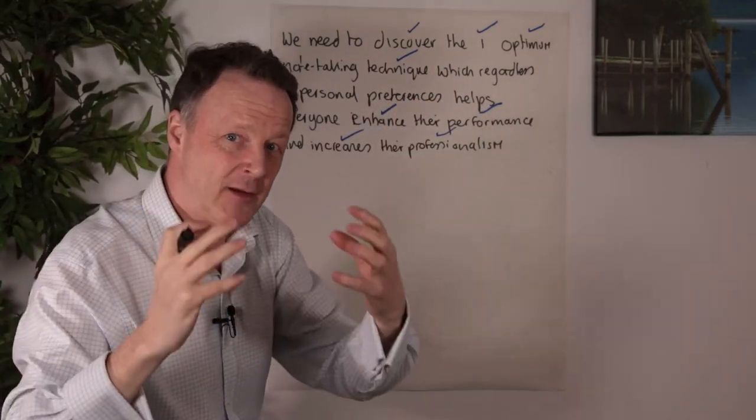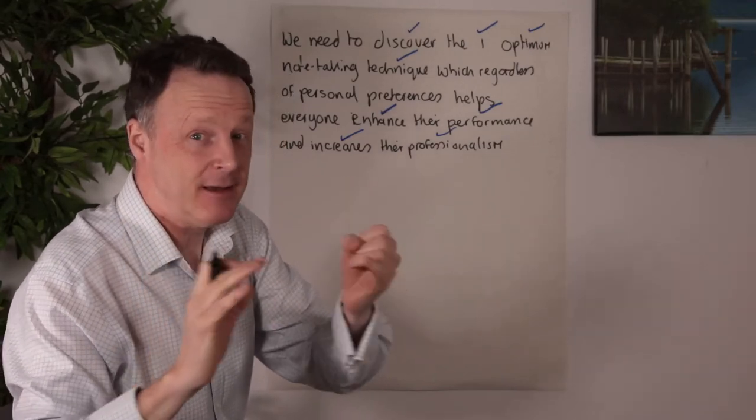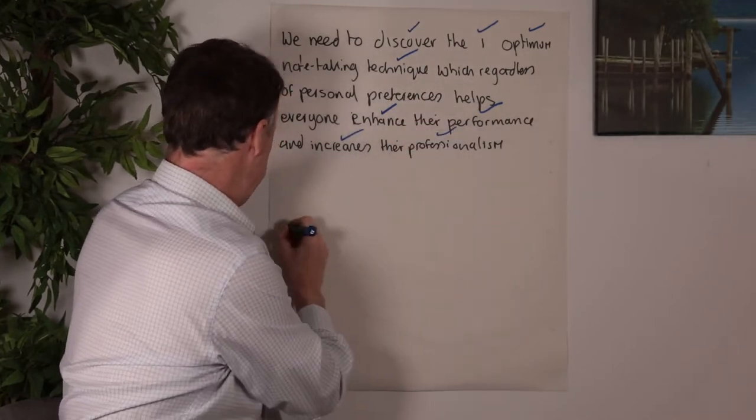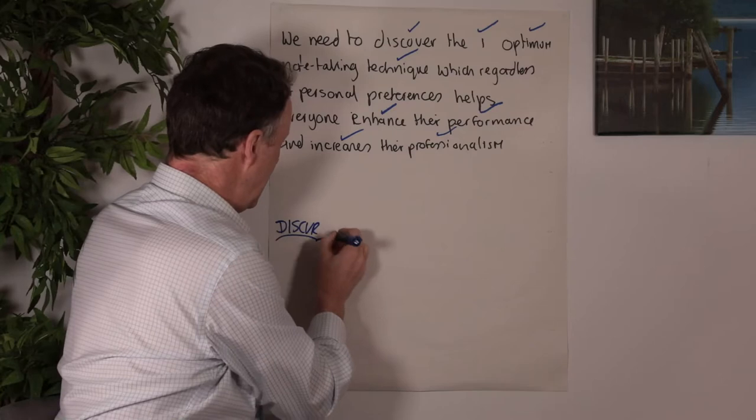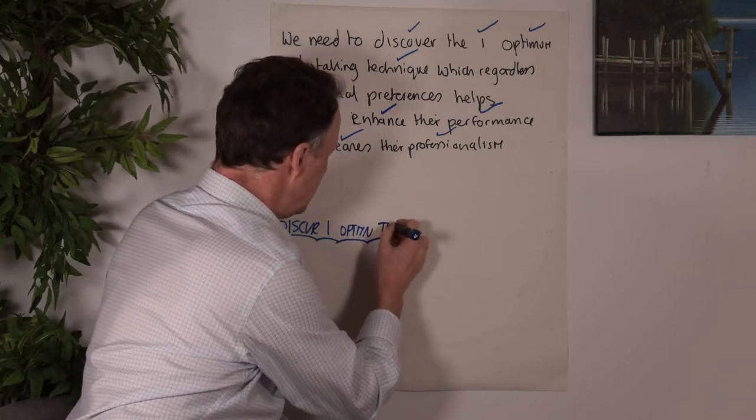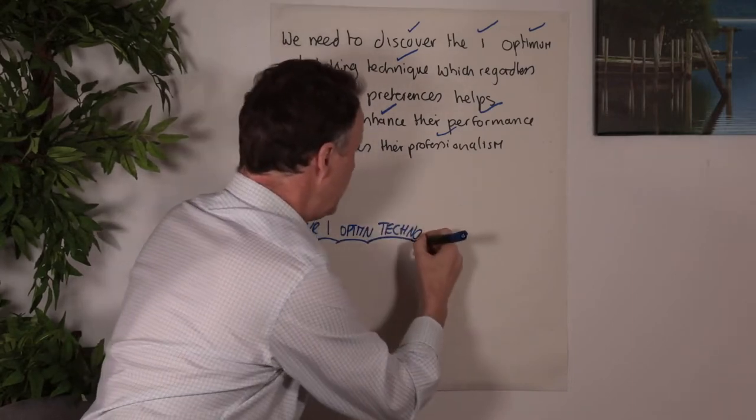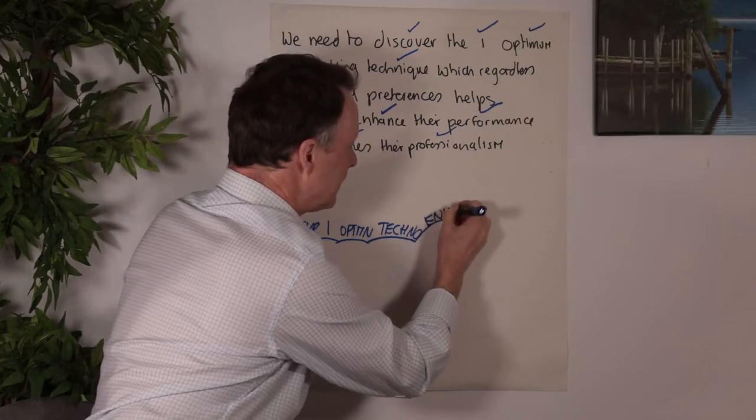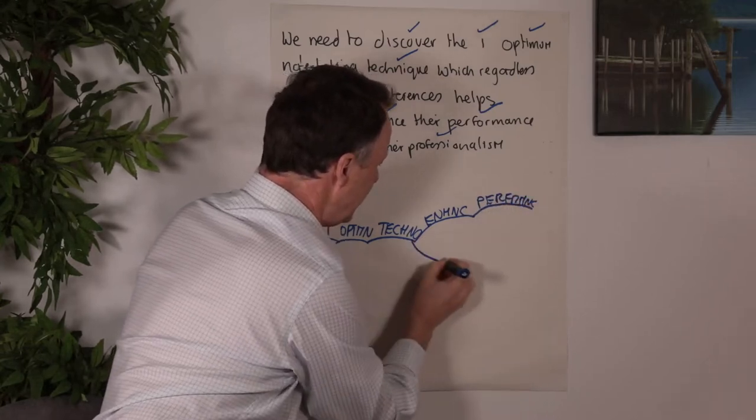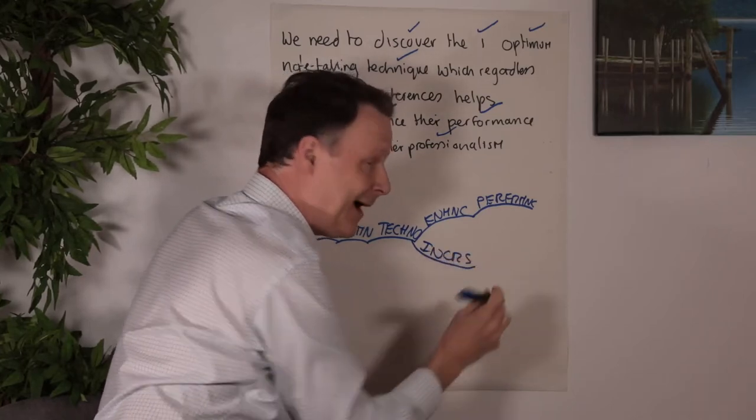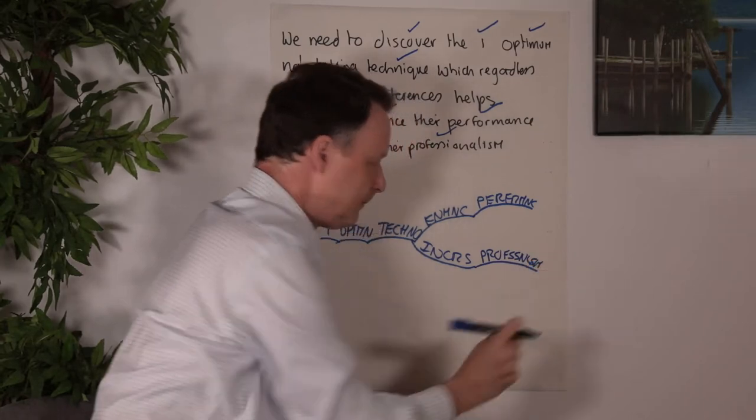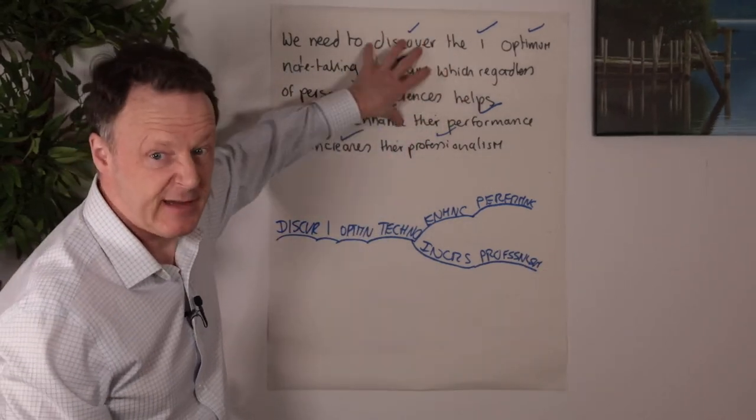The next secret is deep processing. So discover—I abbreviate, it just helps to speed everything up—discover one optimum technique, enhance performance, and critically increase professionalism. I'm giving more value to other people and also getting more value myself and coming across as more professional. So something very different: deep filtering, deep processing.